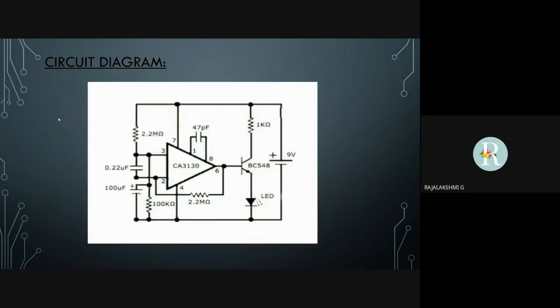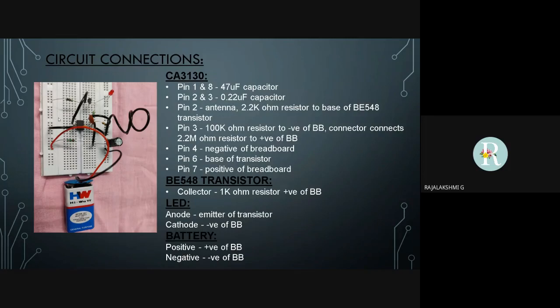Here is the circuit diagram of our project, Mobile Phone Detector. Let us now look at the circuit connections. Starting with CA3130, pin 1 and pin 8 of the IC are connected through a 47 Pico Farad capacitor, whereas pin 2 and pin 3 are connected through a 0.22 Micro Farad capacitor and the antenna is connected to pin 2.